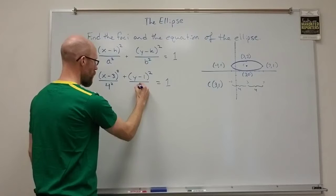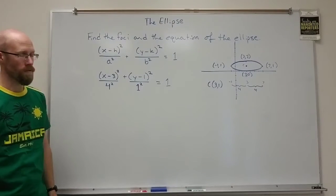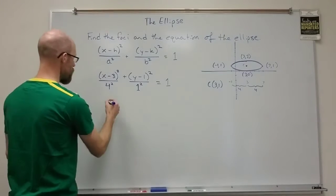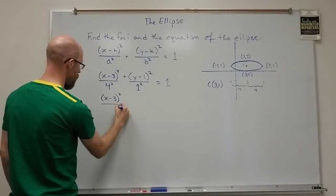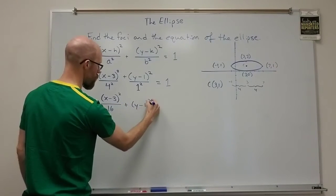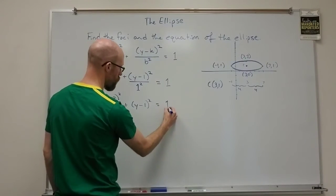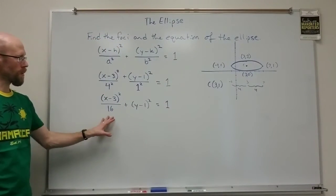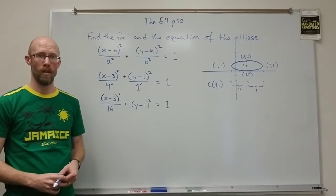So that gives me a b value of 1 and then I square that. And so my final form once I simplify this would simply be x minus 3 squared over 16 plus y minus 1 squared. Now if I divide by 1 that doesn't change anything is equal to 1. And so this would be our final equation in standard form for the ellipse.